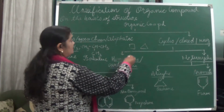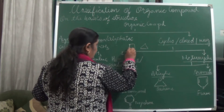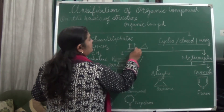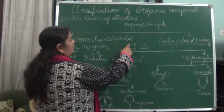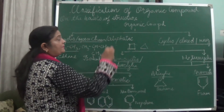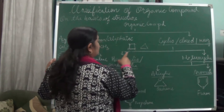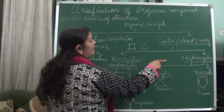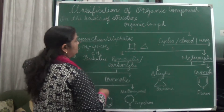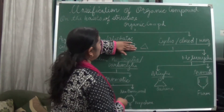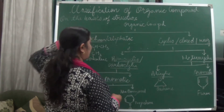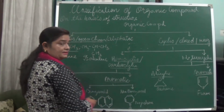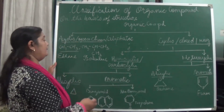Here you can see the ring is not open in nature. This cyclic compound is classified into homocyclic and heterocyclic compounds. When we say homocyclic or heterocyclic, there is a difference. In homocyclic compounds, it is further classified into two: alicyclic and aromatic.